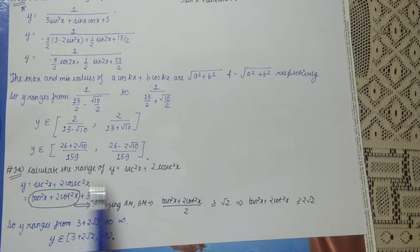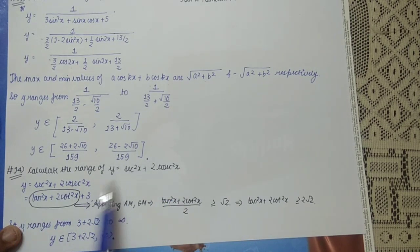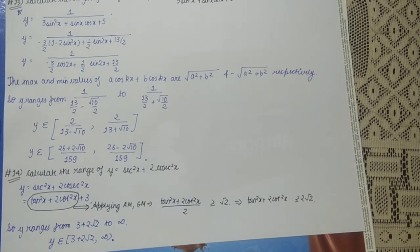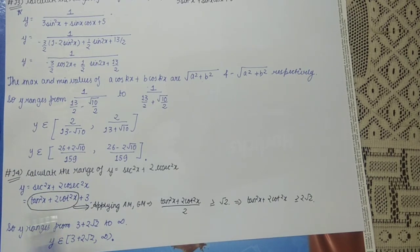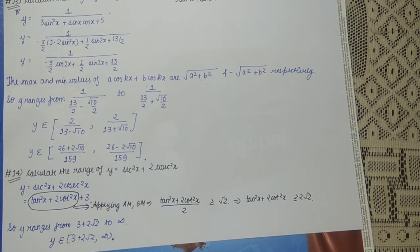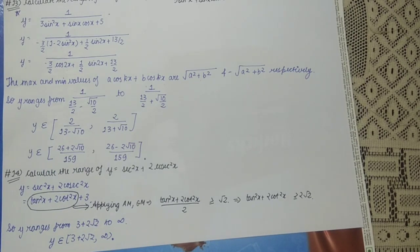Now we find the range of y = sec²x + 2cos²x. Since sec²x = 1 + tan²x and 2cos²x = 1 + cos2x... Rewriting, y = tan²x + 2cos²x + 3. Note that cos²x = 1/sec²x, so by AM-GM: (tan²x + 2cos²x)/2 ≥ √(tan²x · 2cos²x) = √2. Thus tan²x + 2cos²x ≥ 2√2, and y ≥ 3 + 2√2. The minimum 3 + 2√2 is achieved when tan²x = 2cos²x, and y → ∞ when x is an integer multiple of π/2. So the range is [3 + 2√2, ∞).